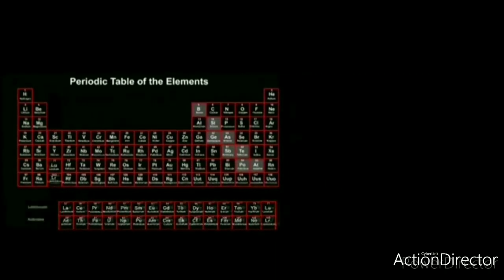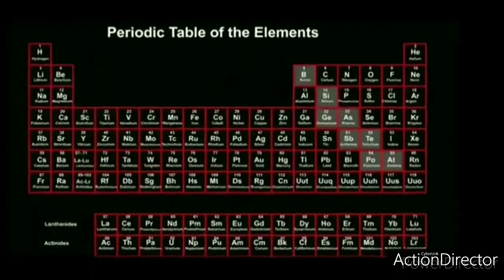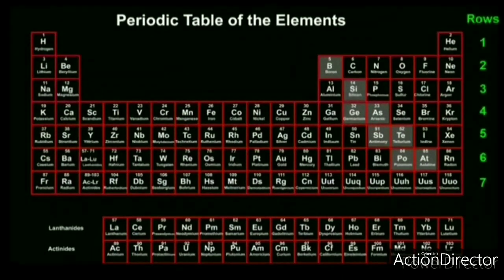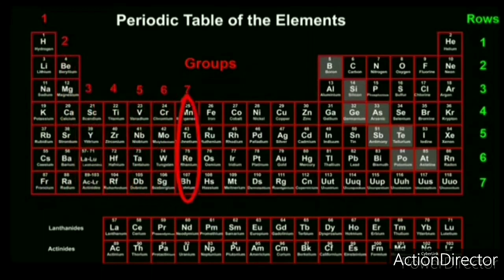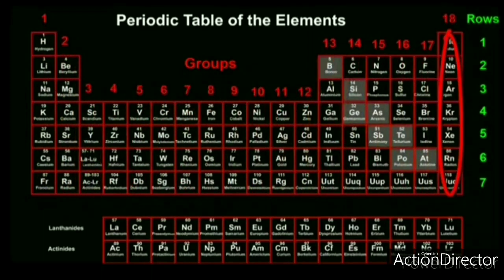Now you can see the vertical columns — we can call them groups. So how many groups are there? 1, 2, 3, 4, 5, 6, 7, 8, up to 18 — there are 18 groups in the periodic table. Remember, elements of each group show similar properties.